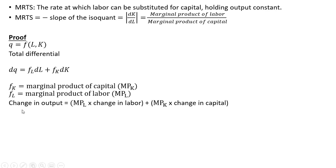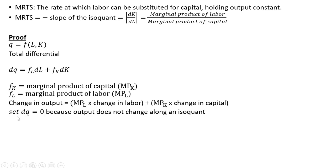So in words, the left-hand side is the change in output. The change in output can be approximated by equaling the marginal product of labor times the change in labor plus the marginal product of capital times the change in capital. We're going to set the left-hand side, the change in output, equal to zero, because output does not change along an isoquant.